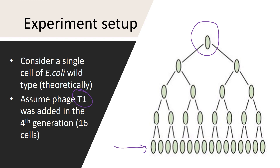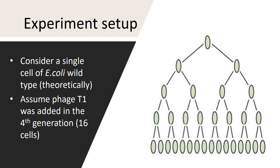Since the wild type E. coli is sensitive towards the T1 bacteriophage, it will get lysed. So all the progeny cells derived from the wild type are also sensitive towards the T1 bacteriophage and will all be lysed in the presence of it. However, if a mutation occurs in any of these progeny cells leading to resistance, those cells won't get lysed — they will become resistant to the action of the T1 bacteriophage.